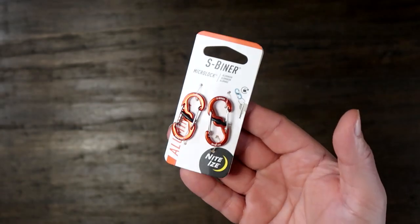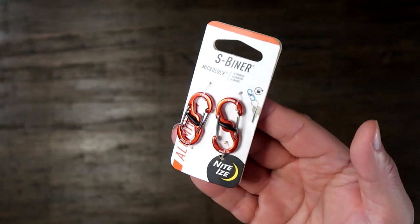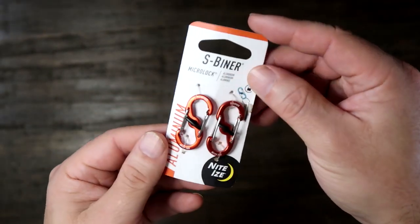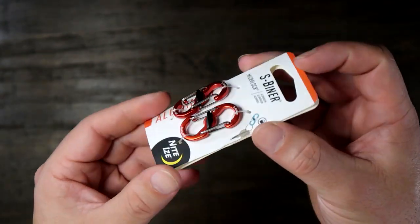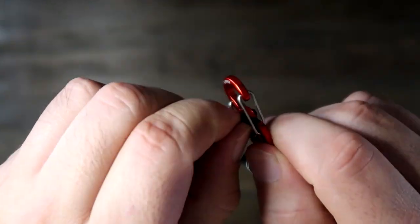So here are these S-Biner micro lock key holders. This is a two-pack and it comes in a variety of colors. I just happened to buy the red. This is a great tool to secure and hold your keys.